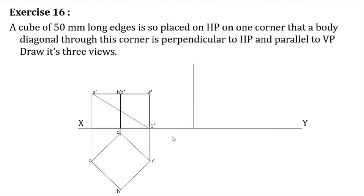In this condition, the solid diagonal is perpendicular to HP and parallel to VP. In the first condition itself, the solid diagonal is already parallel to VP, so we don't have to do anything special to make it parallel to VP. What we have to do is make it perpendicular to HP. To do that, in the front view we simply make it perpendicular to the XY line — we draw the front view such that the solid diagonal is perpendicular to the XY line.